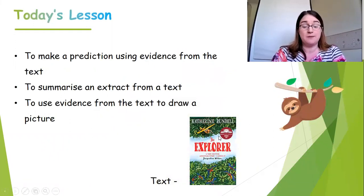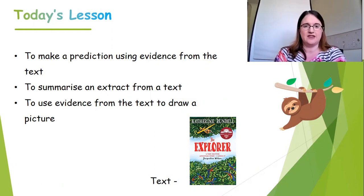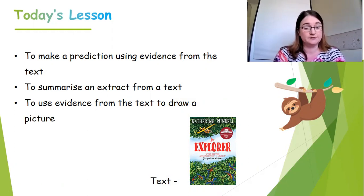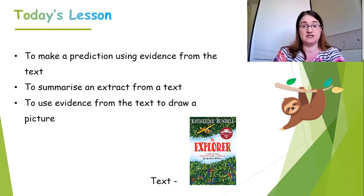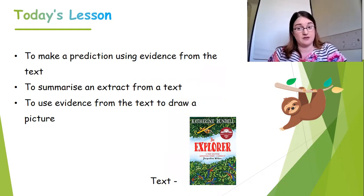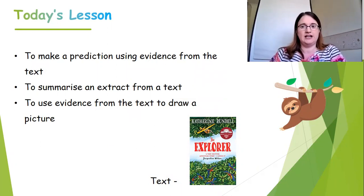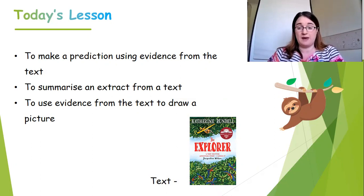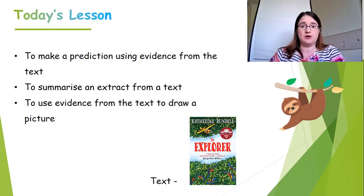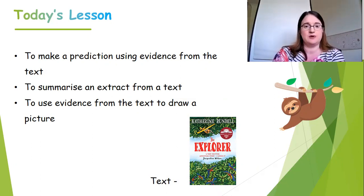First of all, we're going to be trying to make a prediction using evidence from the text, and we've done that before at the beginning of The Great K-pop Tree. We are also going to be using our summarising skills again - we did that with The Great K-pop Tree and with our poetry. So we should be getting really good at that by now. And then we're going to use evidence from the text to draw a picture, which is a similar activity to one we've done before. All the activities are quite similar but just with a new book.